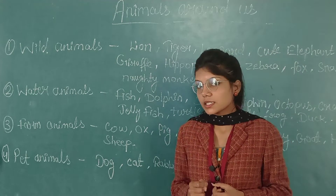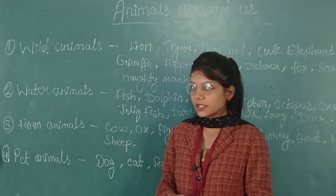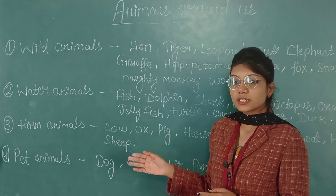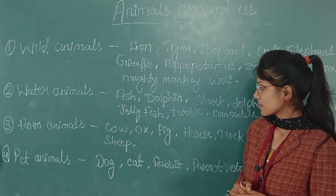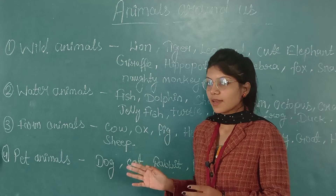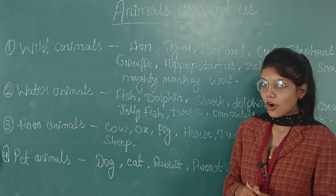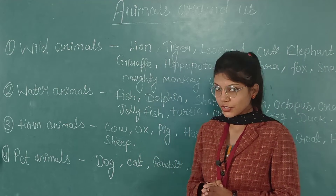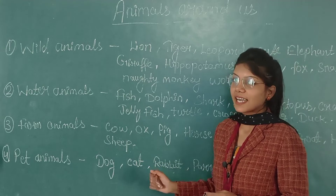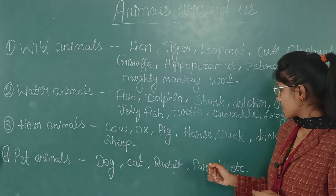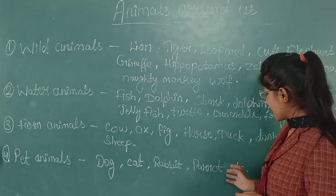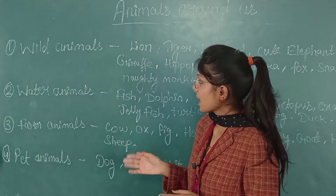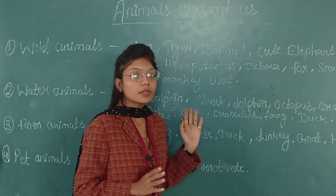Some animals which live with us are called pet animals. We feed them and they also stay with us. The first one is dog — a dog is a very faithful animal. Now second is cat, rabbit, parrot, and many more. So these all are the animals who live around us.